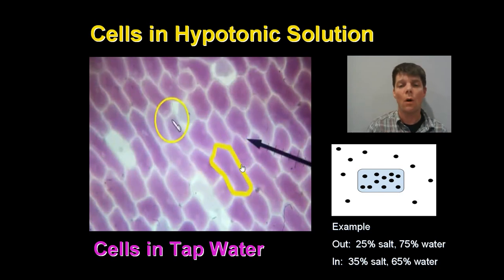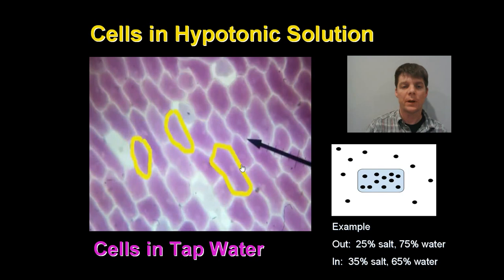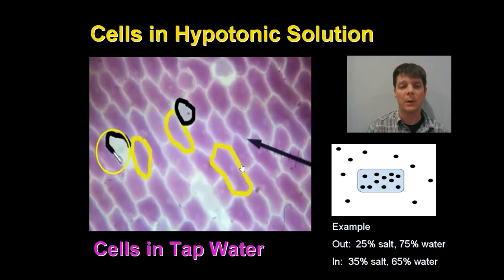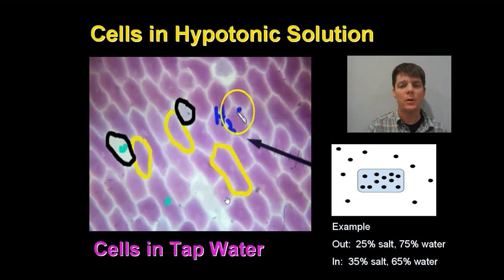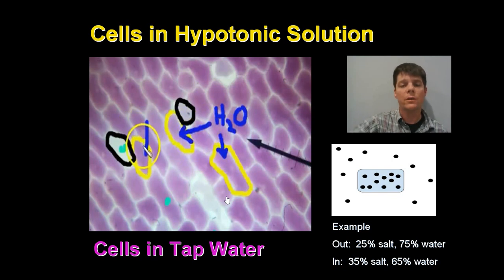Once again, I'm tracing the cell walls of some of the red onion cells in yellow. These are cells that do have pigment on the inside of them — I've traced three cells. Now I'm going to trace the cell walls of a few of the cells that do not have pigment on the inside of them. Next I'm going to highlight some of the nuclei of the cells in a bright blue color. Because these cells are in a hypotonic solution — because water is more highly concentrated outside of the cell and less concentrated inside of the cell — water is going to flow into these cells. It's like that bag is filling up with water inside of the jar to completely fill all the space inside of the cell.